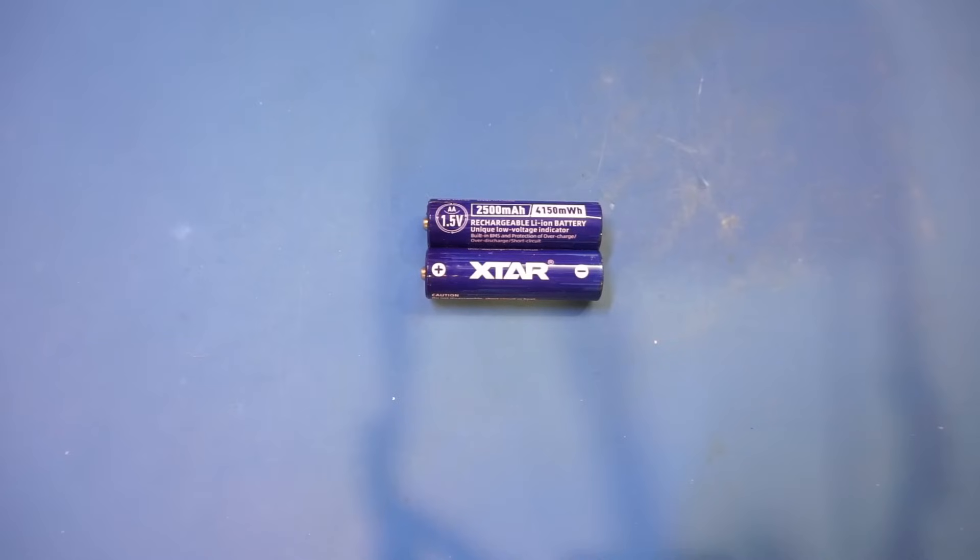Now, one benefit of this constant voltage output is for applications such as flashlights, especially the cheap ones, as they do not have built-in regulators, and the light output would go dimmer as time goes by with your typical batteries. But not for these XTAR batteries, due to the built-in voltage regulation.